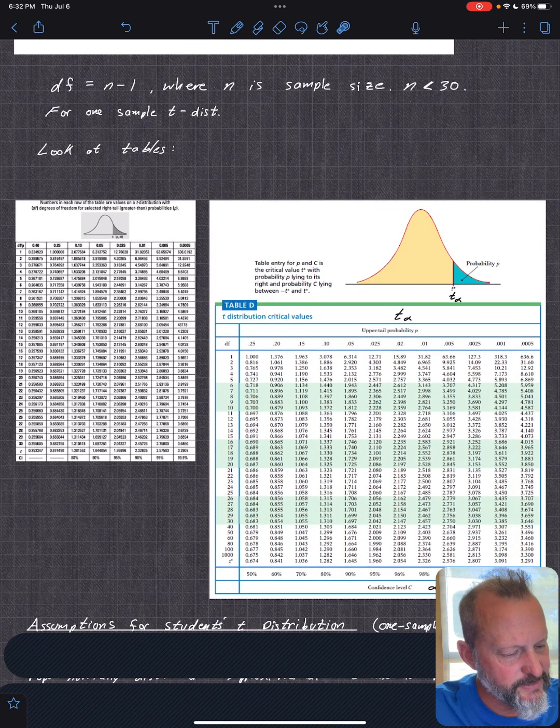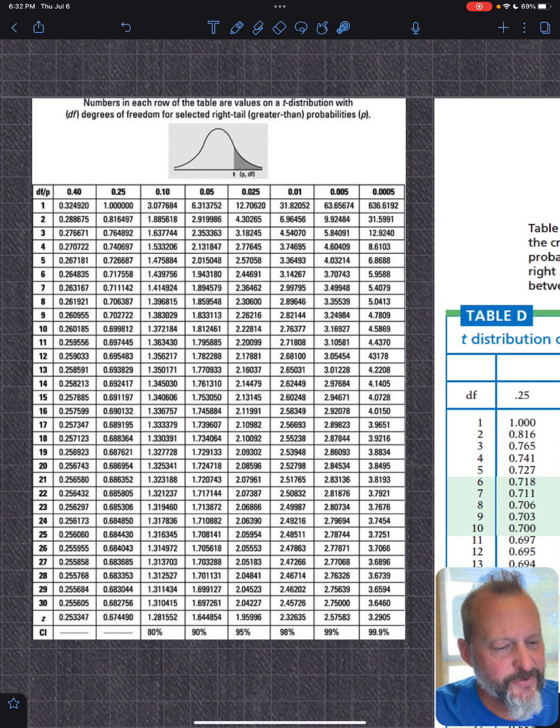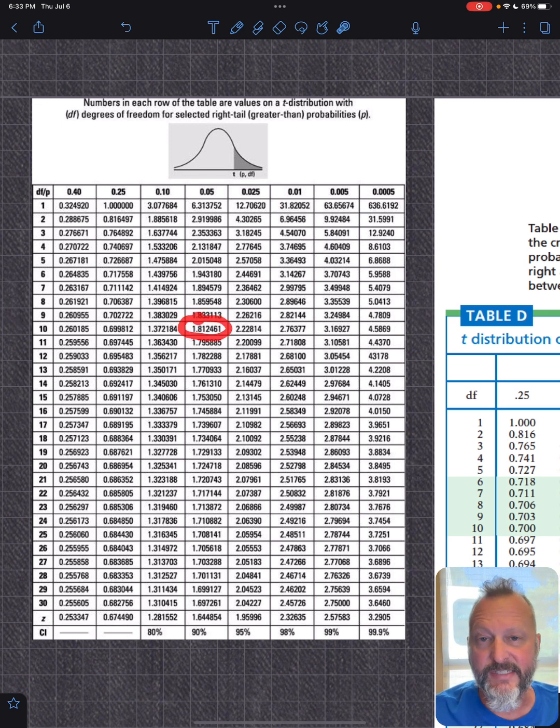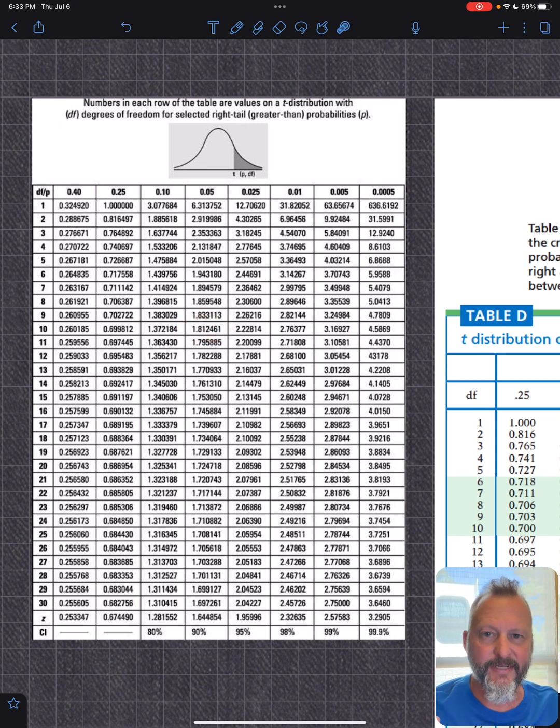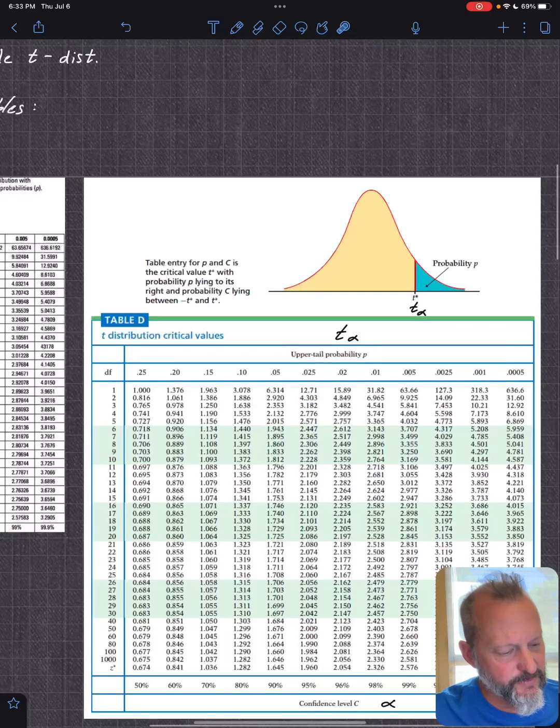These are the t tables. I picked two different ones just to take a look at. And for some reason they do right tailed. Remember that Z summed from left to right. Well, the t distribution sums this side and it's symmetric.